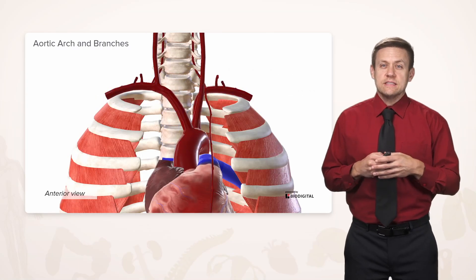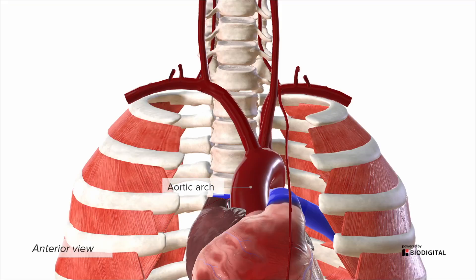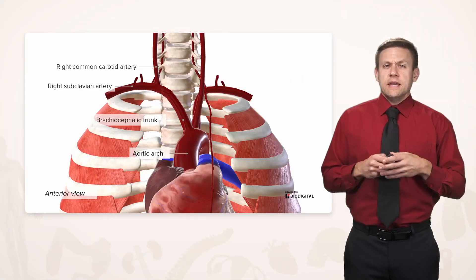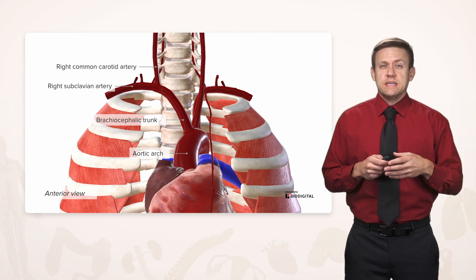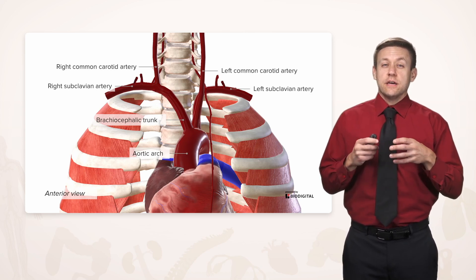If we remove the veins, we can see our aortic arch a lot better. Here we have our aortic arch, and this first very large branch is something called the brachiocephalic trunk. As the name implies, it's going to supply the upper limb and head and neck, so it will branch into a right common carotid artery supplying the head and neck, and a right subclavian artery supplying the upper limb.